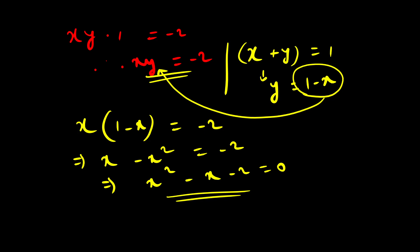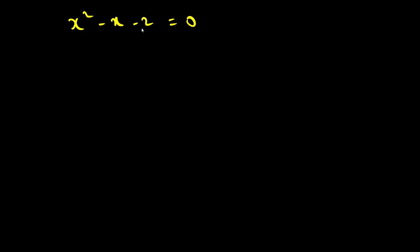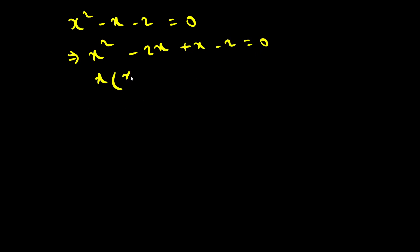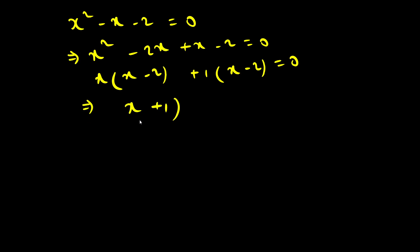Let us solve x² - x - 2 = 0. I can rewrite this as x² - 2x + x - 2 = 0, which factors as x(x - 2) + 1(x - 2) = 0, giving (x + 1)(x - 2) = 0.